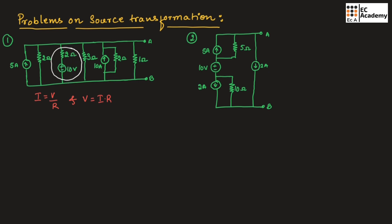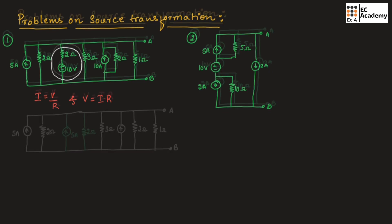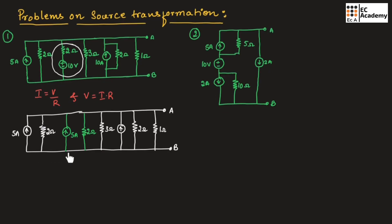Let us redraw the circuit. This is the circuit after source transformation. Here this voltage source is converted into current source, and we have divided 10 by 2 and obtained 5 amperes.